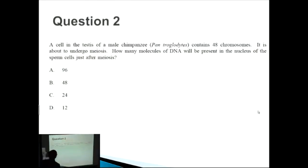So with question two, this is actually quite a tricky question. A cell in the testes of a male chimpanzee contains 48 chromosomes and it's about to undergo meiosis. How many molecules of DNA will be present in the nucleus of the sperm cell just after meiosis? The important thing to know is that there are 48 chromosomes in this testes cell. So this is an initial testes cell prior to undergoing meiosis. How many molecules of DNA will be present in the nucleus just after meiosis? The important thing to know about this one is all the aforementioned information as well as that 48 chromosomes.